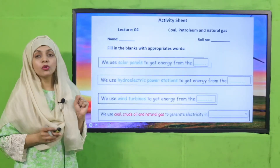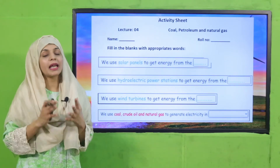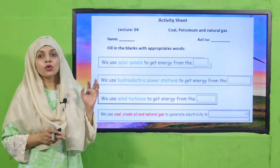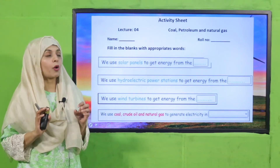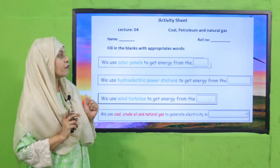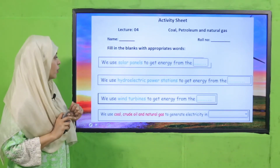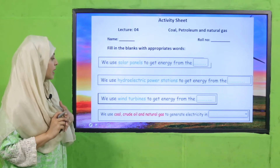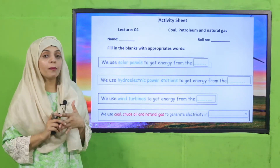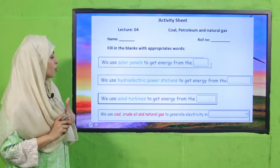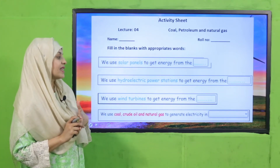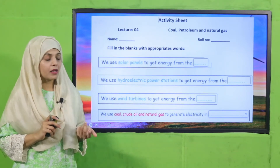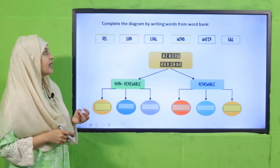Now is the time for practice. You can download this worksheet from the description box below this video, or get it in print form from your teacher. Fill in the blanks with appropriate words. We use solar panels to get energy from the sun. We use hydroelectric power stations to get energy from water. We use wind turbines to get energy from the wind. We use coal, crude oil, and natural gas to generate electricity in our homes and industries.